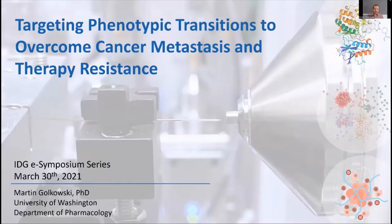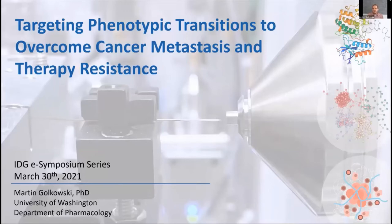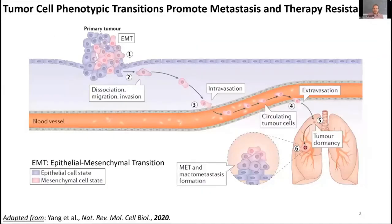Thanks Gary for the introduction. Our lab is interested in cancer metastasis and therapy resistance. We merge MS-based proteomics, chemical biology, and pharmacology approaches to identify novel targets to overcome these issues. Cancer metastasis is the primary cause of cancer-related mortality. In order for cancer cells to metastasize — to spread across the body — they need to escape the primary tumor by undergoing phenotypic transitions, most famously the epithelial-mesenchymal transition (EMT).